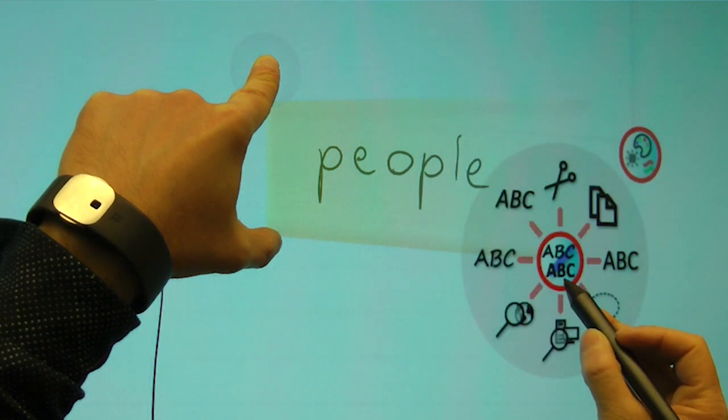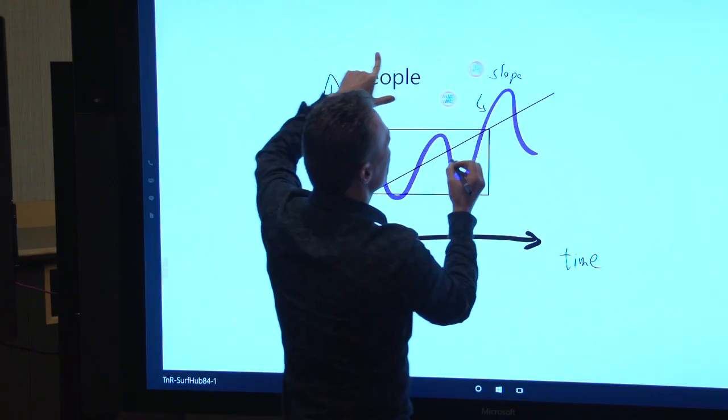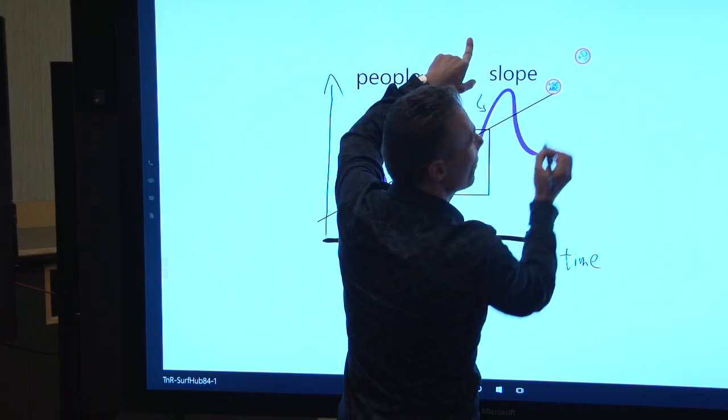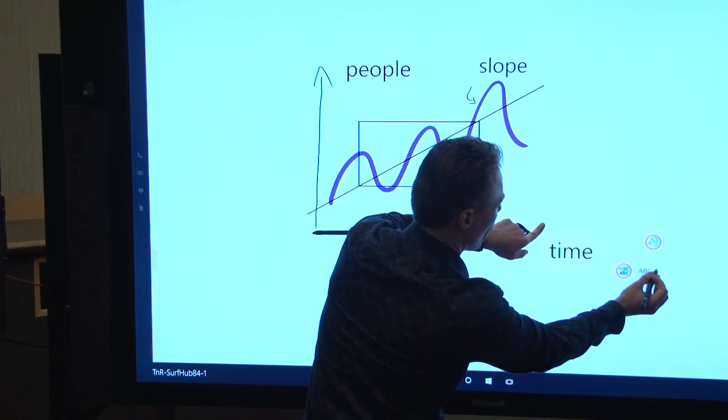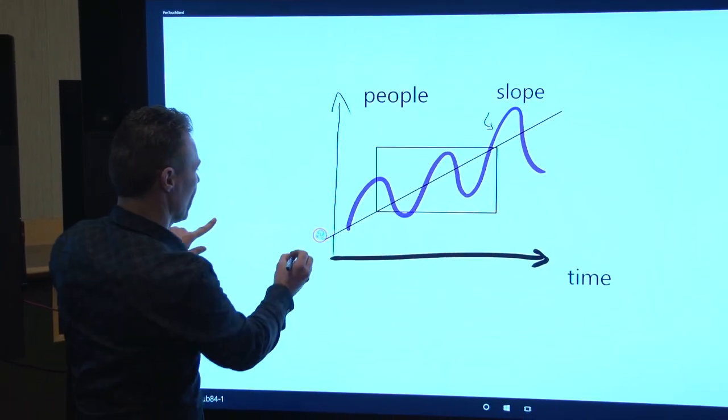And now I can convert the text to regular text, or I can go back to handwriting if I want. So I can quickly go through and just convert all the text and make a nice slide out of what we discussed.